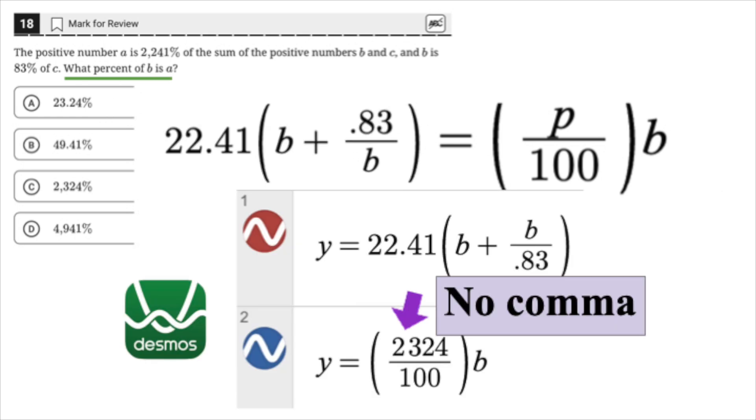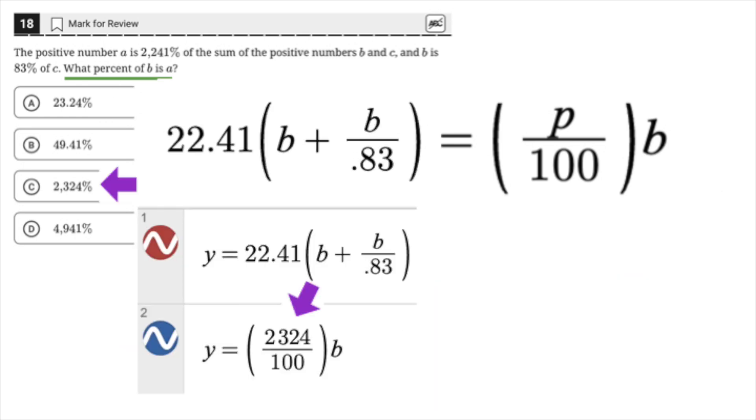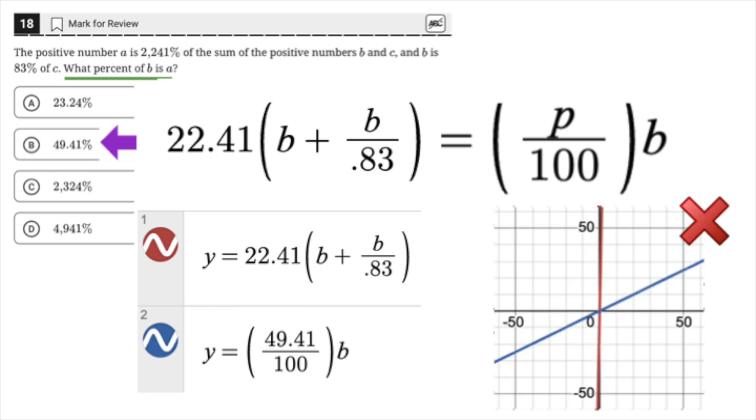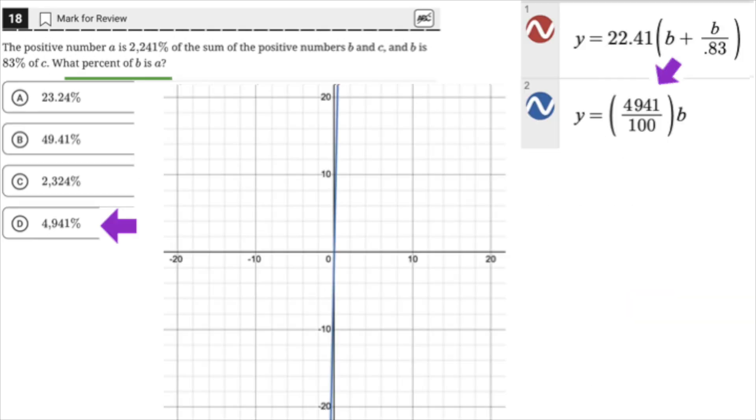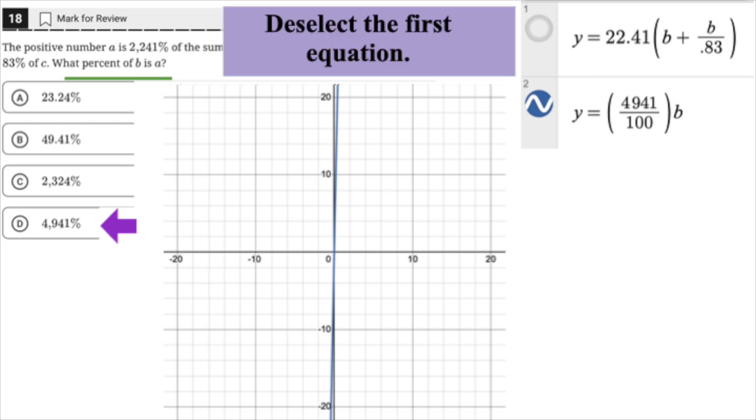A is not right, I would just delete the decimal point to effectively test out answer choice C. C is also wrong, now try B. Wrong. Delete the decimal point and you'll find that, yes in fact, D is our answer. You'll know you're right because when you deselect the first equation, it is clear that the lines perfectly overlap one another.